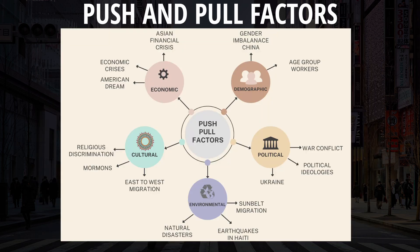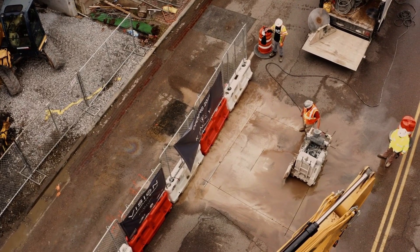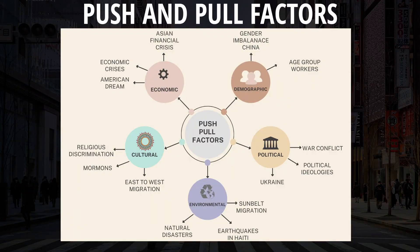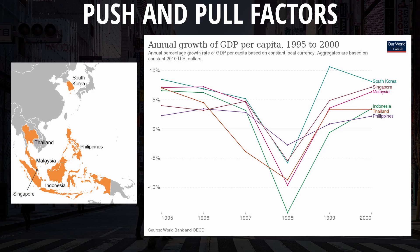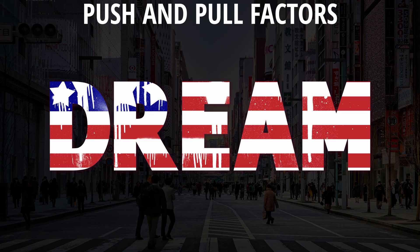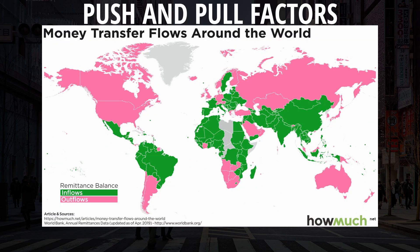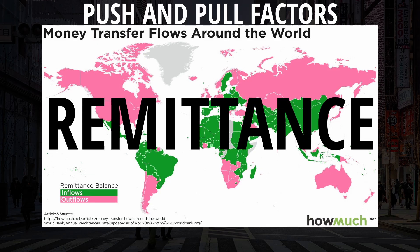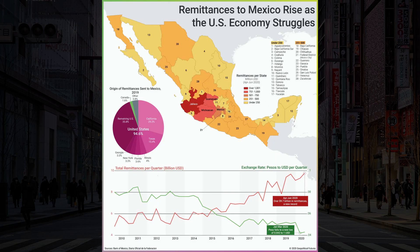A demographic push factor would be the gender imbalance in China discussed in Part 1, and a demographic pull factor would be if a country was seeking a particular age group of workers. An economic push factor is usually in the form of economic turmoil or crises, such as the 1997 Asian economic crisis, which led to people emigrating from Asia to come into the United States — which is immigration. People moving to the U.S. because of the American dream and economic opportunities would be a pull factor. Sometimes people move to other countries simply to make money for their family; when they send money back home, this is called a remittance, which occurs quite frequently between the United States and Mexico.